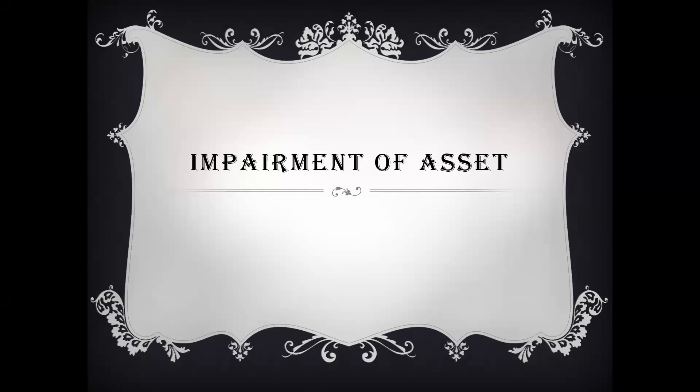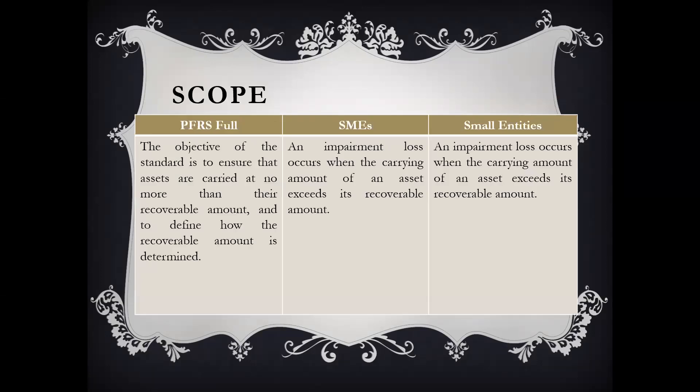Let us go first to the scope of this standard or sections. Basically, across the three frameworks, it's saying the same thing in terms of scope — that the objective of this particular standard or section is to ensure that assets will not be carried at more than their recoverable amount. So if the carrying amount of your asset is more than the recoverable amount, then there is a need to recognize impairment.